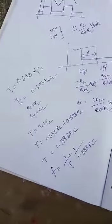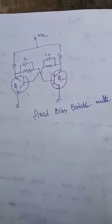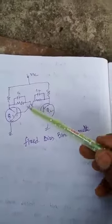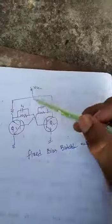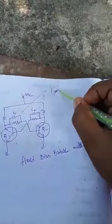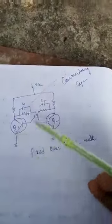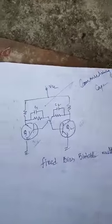For a monostable multivibrator the frequency is 1 by 0.693 RC. The next question: commutating capacitors are used to speed up the transition. In a fixed-bias bistable multivibrator, the two coupling elements are resistors for the two transistors. In addition to these two resistors, two capacitors are connected in shunt — these are called commutating capacitors. Their purpose is to change the transition from the first stable state to the second stable state in a faster manner.